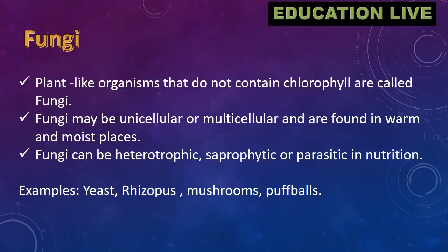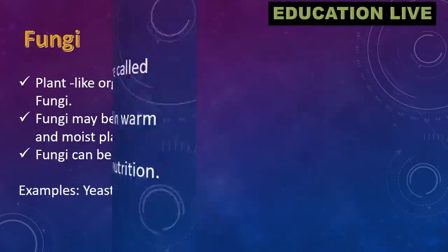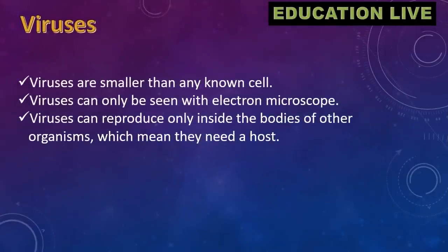Plant-like organisms that do not contain chlorophyll are called fungi. Fungi may be unicellular or multicellular and are found in warm and moist places. Fungi can be heterotrophic, saprophytic, or parasitic in nutrition. Examples include yeast, rhizopus, mushrooms, and puffballs.